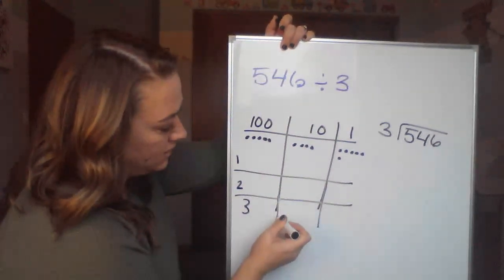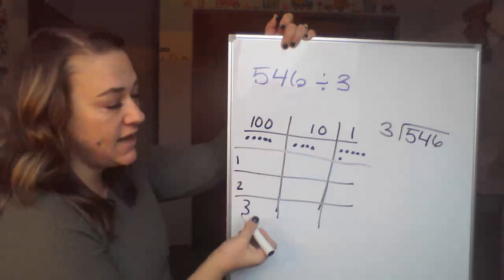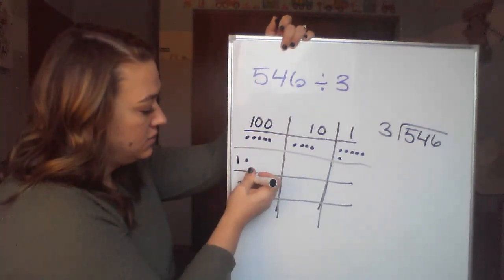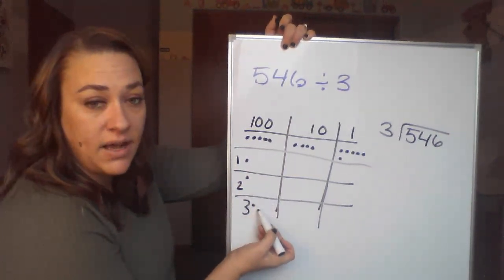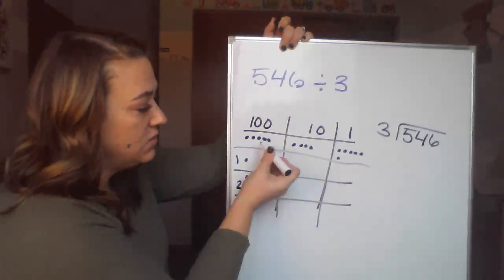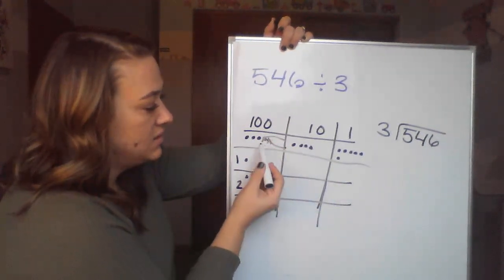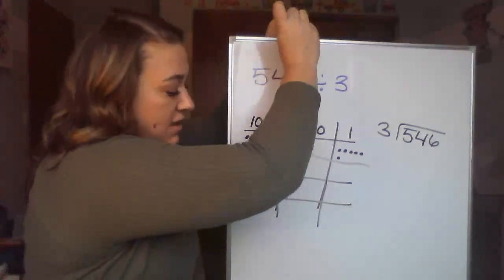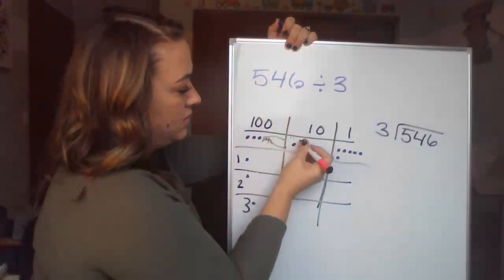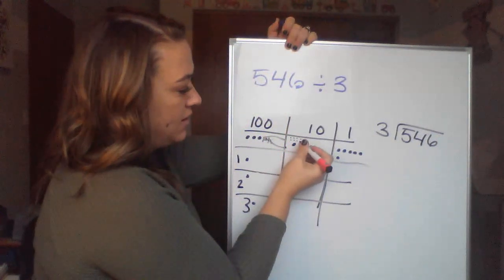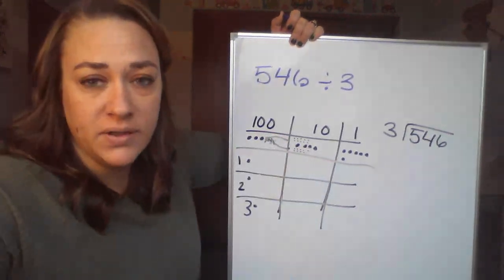Now we're dividing that into as equally as possible. So if I have 5, can I divide that equally between 3 groups? Well, that's not going to work because then I would have 1 group with only 1 in it, and it needs to be all the same. So we're going to have to take 2 of those and decompose those into tens. So each of those are worth 10. So we've got 10 plus the 4 we already had equals 24.